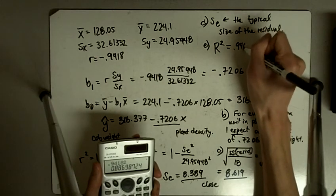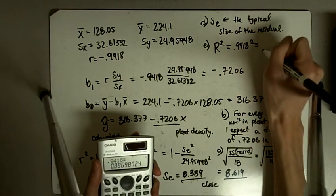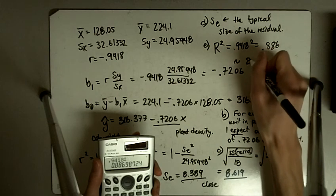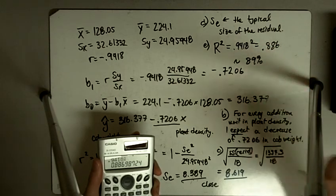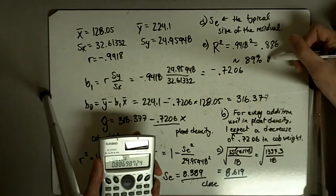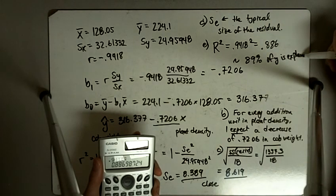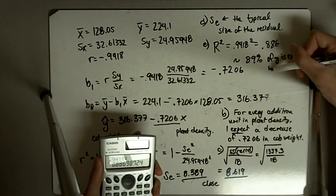So this is 0.9418 quantity squared. That gives me 0.886. So about 89% of Y is explained by X.